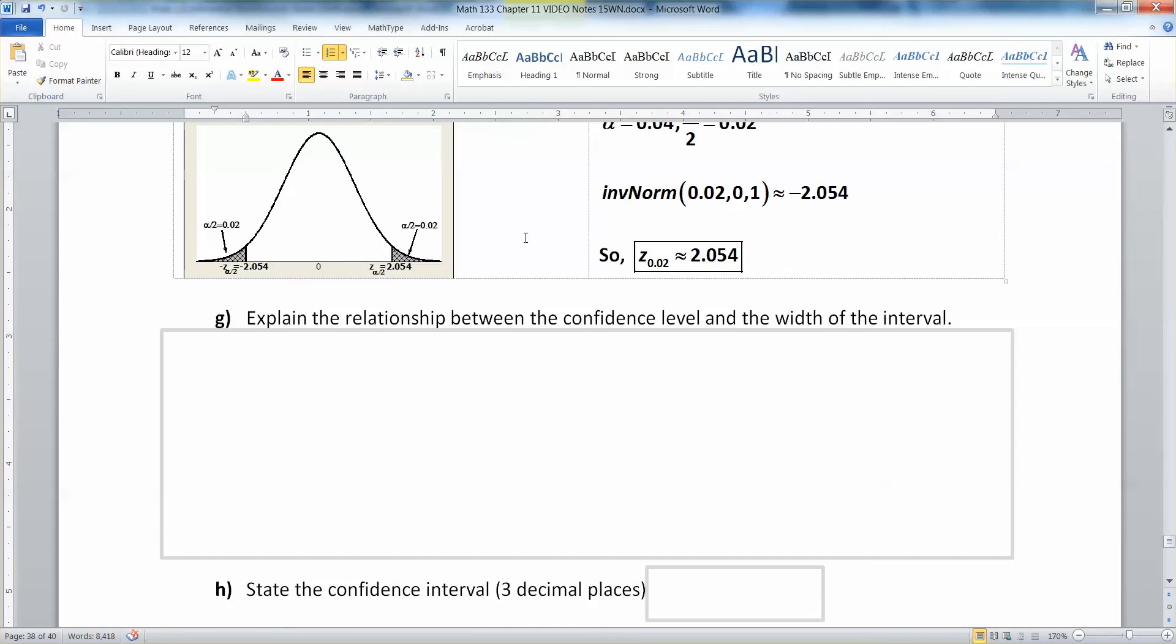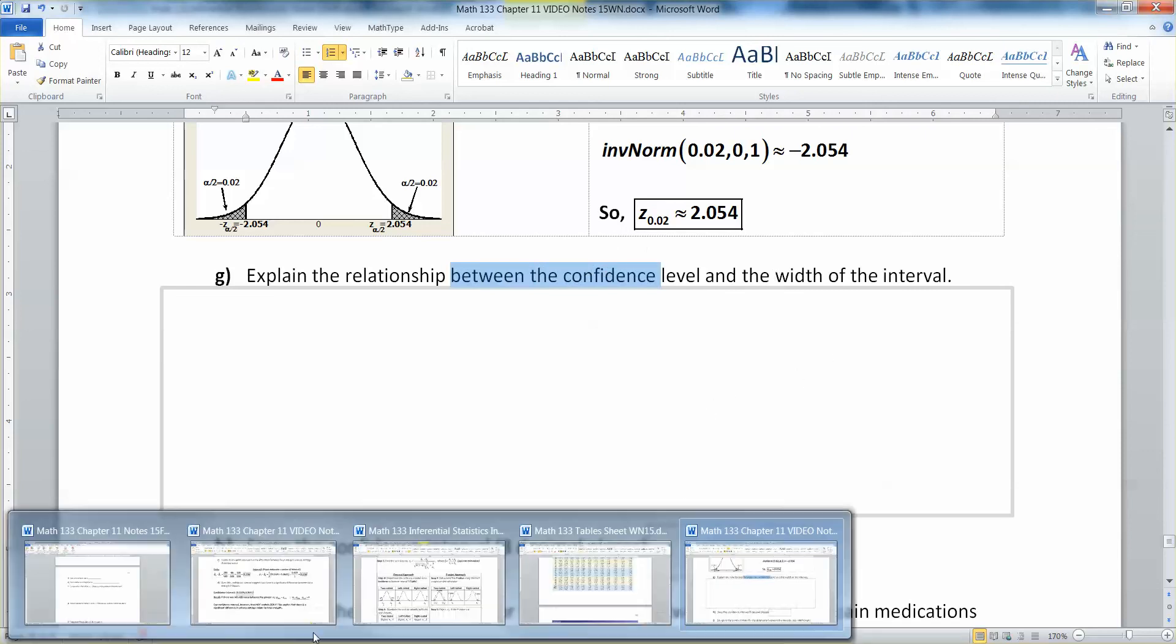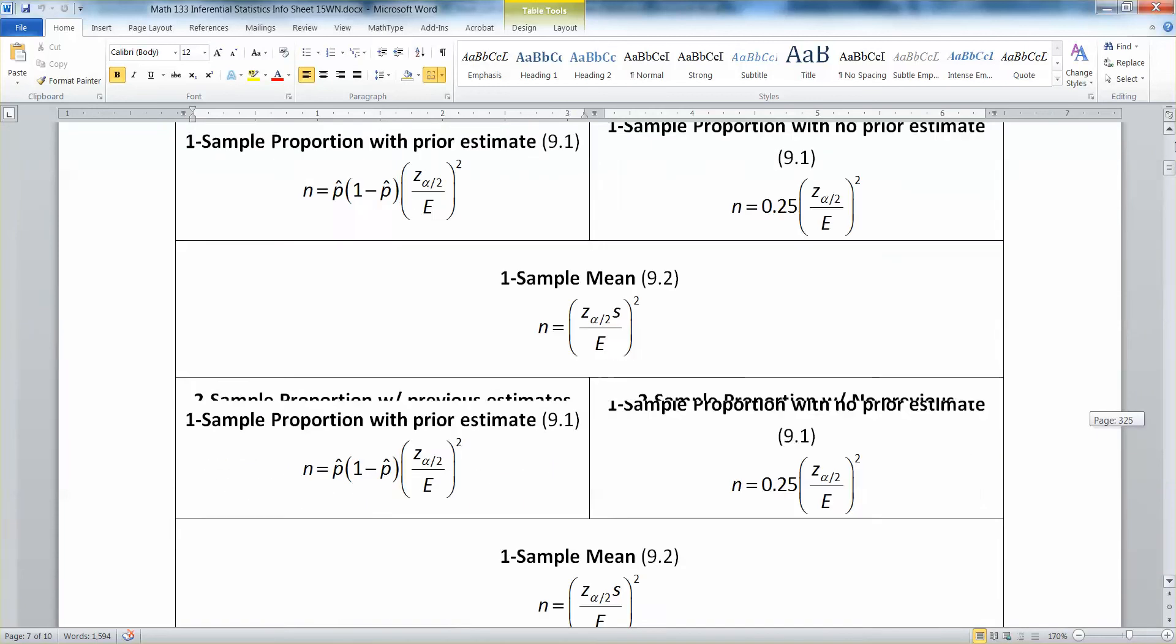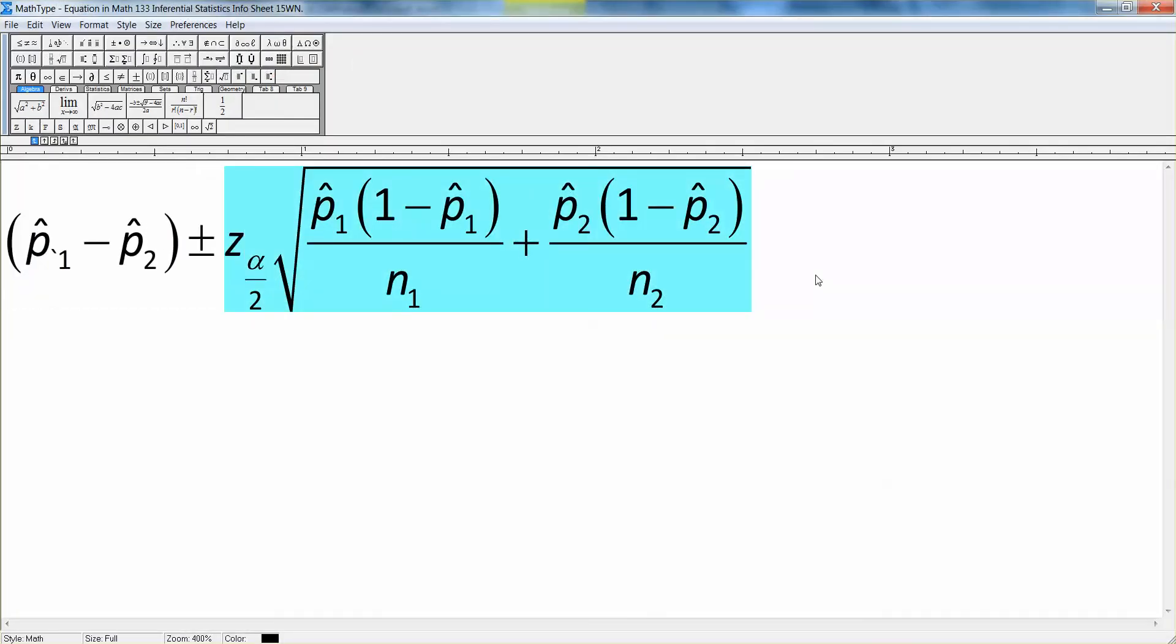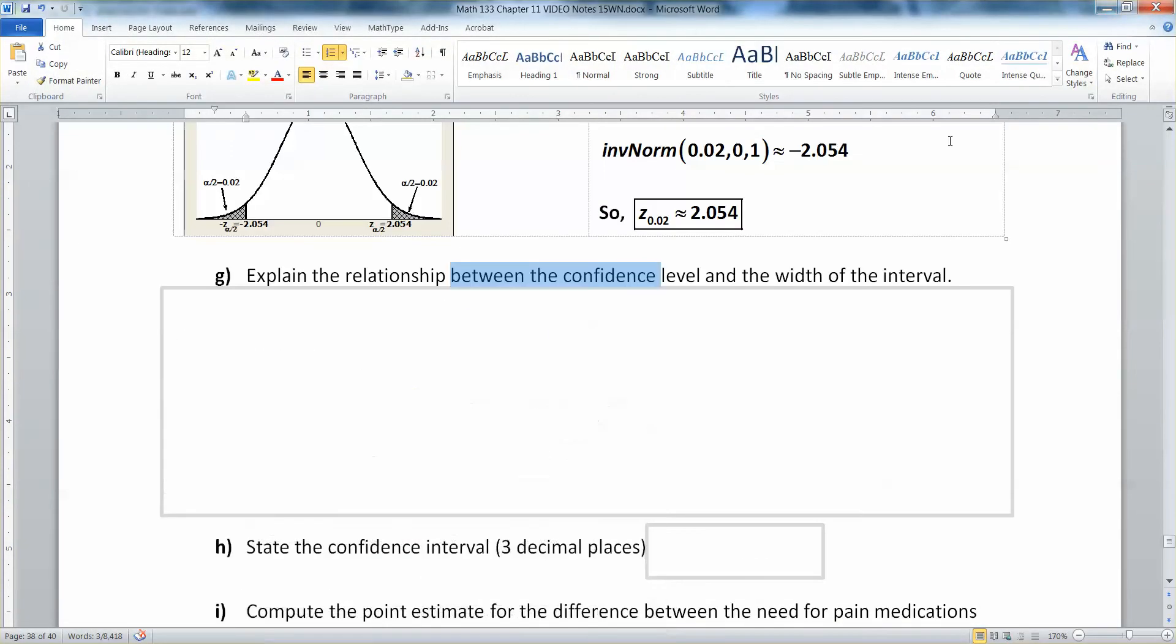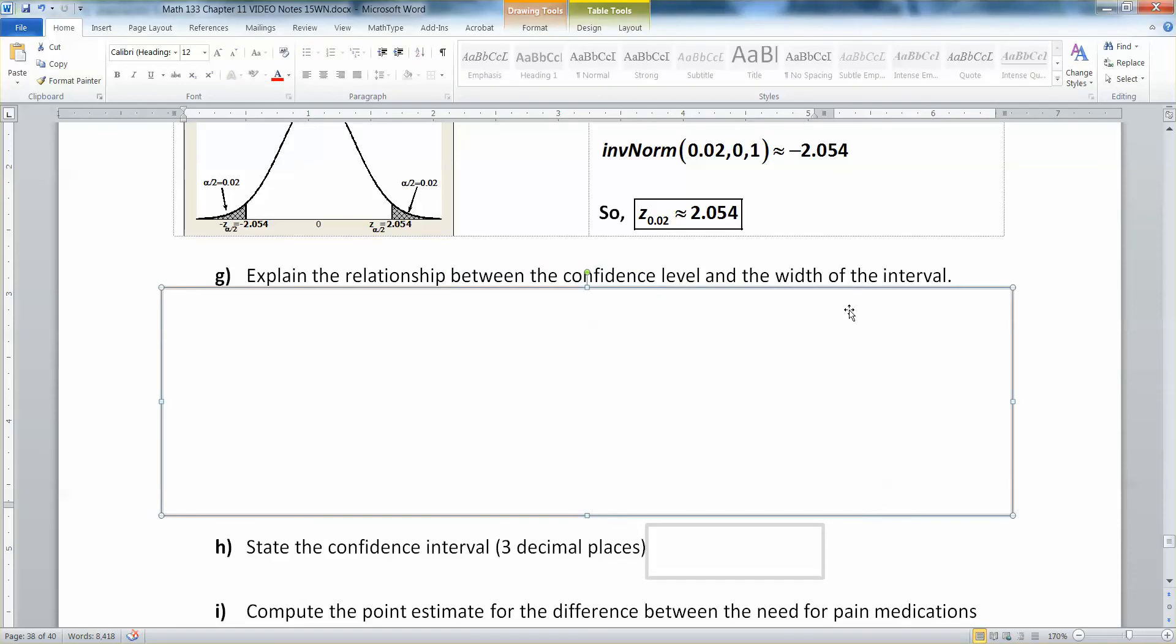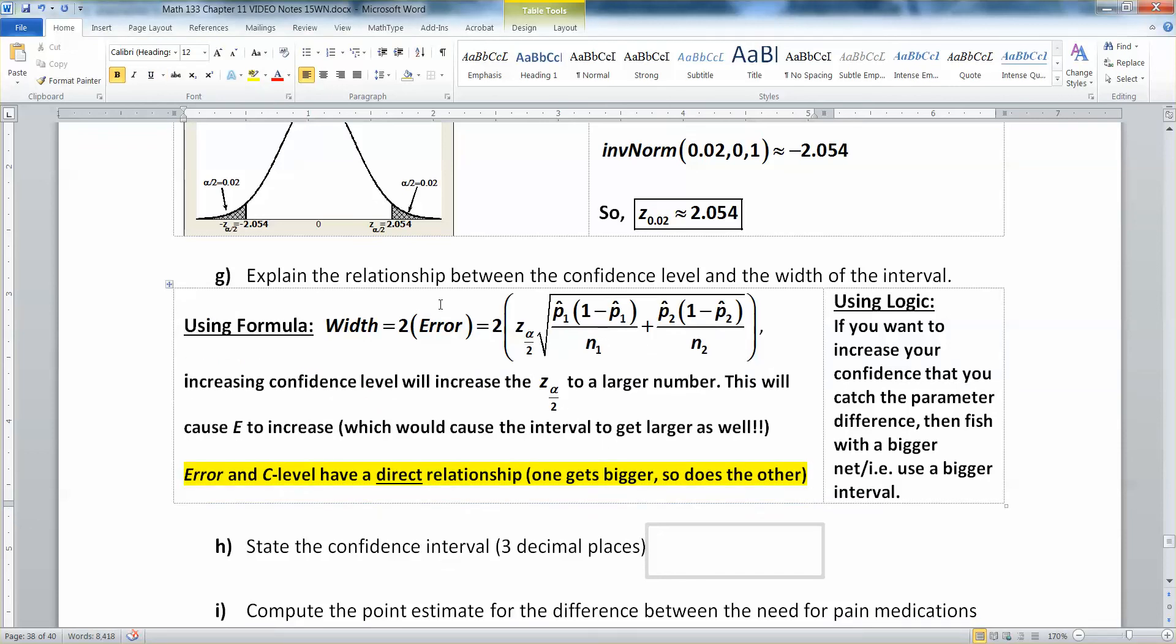Now, this is something we first learned about in chapter 9. We want to explain the relationship between the confidence level and the width of the interval. Let me remind you of a couple things. The width of the interval is double the error. And the error is the back half of the formula. So when you look at this big formula, this right here is your margin of error. It's at half the width of your interval. So if you make your error larger, you're going to make your confidence interval larger. If you look at the formula, you can see that width is equal to twice your error. Increasing the confidence level will increase the Z alpha over 2 to a larger number. And that will cause the error and width to increase as well.